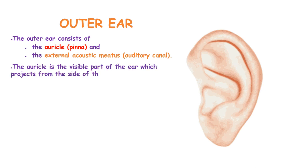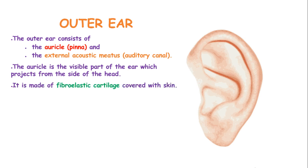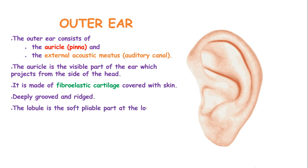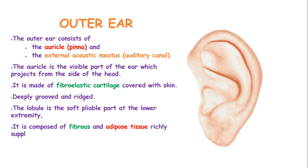The auricle is the visible part of the ear which projects from each side of the head. It is made of fibroelastic cartilage covered by skin. The lobe is the soft, pliable part of the lower extremity, and it is composed of fibrous and adipose tissue richly supplied with blood.